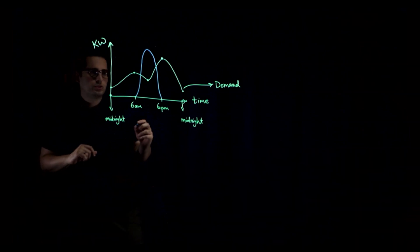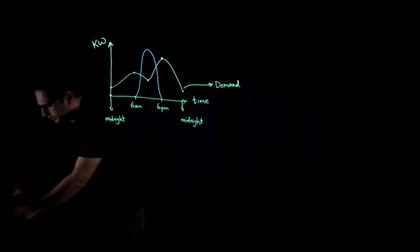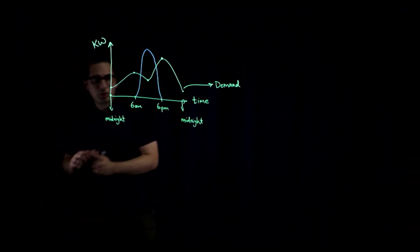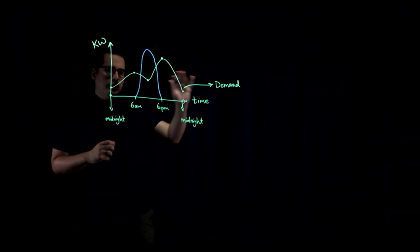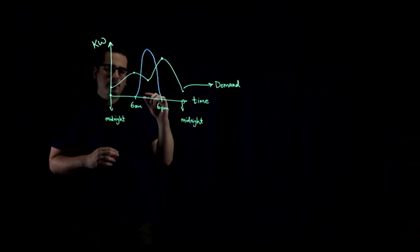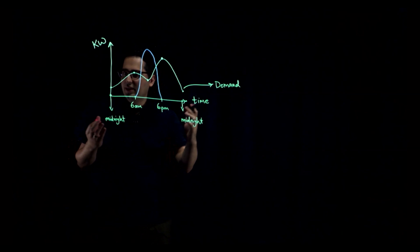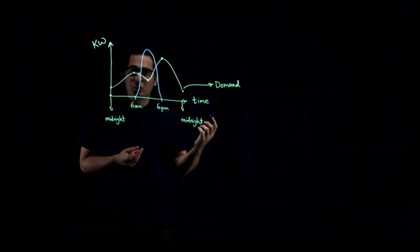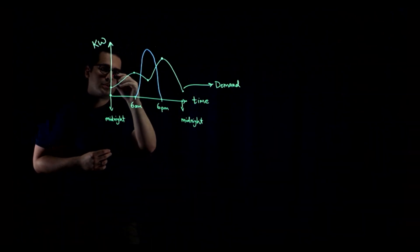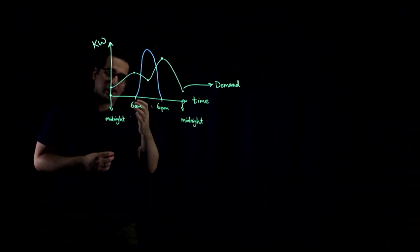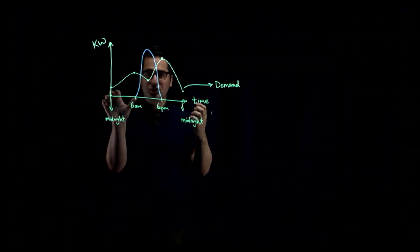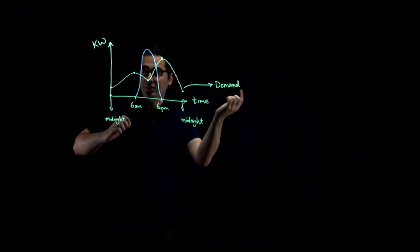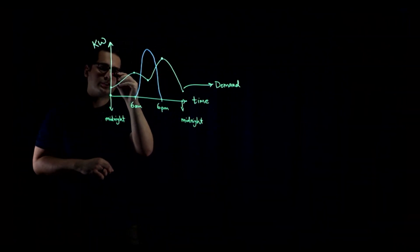The other thing would be wind, for example. You are using wind to generate electricity. Again, some days you might have windy days, and some days it's not windy at all. And even within a day, you might have early hours of the day windy and then not windy. So it actually fluctuates.